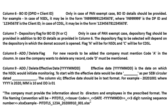Column 8 - Add or Delete Flag. For new records to be added, the company must mention code A in the column. In case the company wants to delete any record, code D must be mentioned. Column 9 - Add or Delete Effective Date. The effective date is the date on which NSDL will initiate monitoring. To start with, the effective date would be the date as per the SEBI circular. The effective date column should be in text format — for example, 20201001, where year is 2020, month is 10, and date is 01.